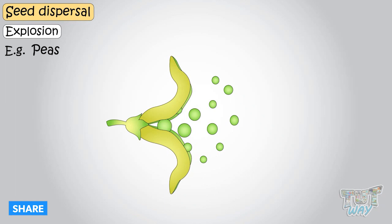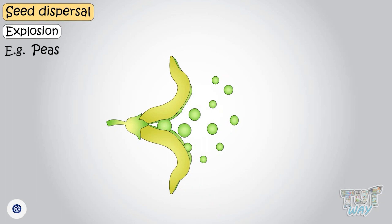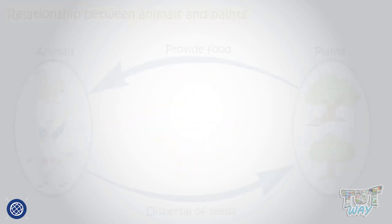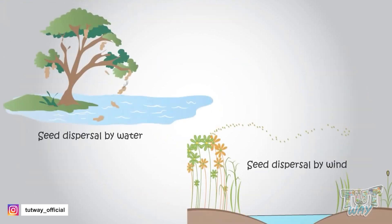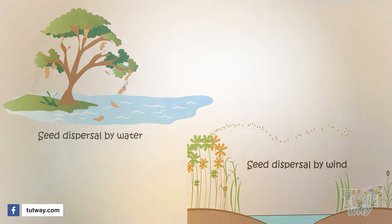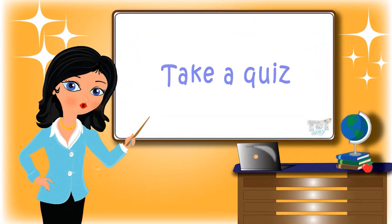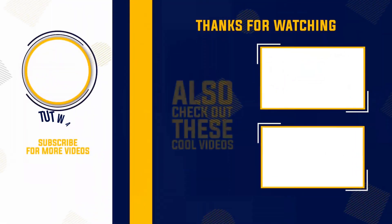So kids, today we learned a lot about how plants disperse or spread their seeds to distant locations in order to grow new plants, and how animals and plants depend on each other, and how water and wind too help plants disperse their seeds. Now go ahead and take a quiz to learn more! Bye-bye! Thank you so much for watching!